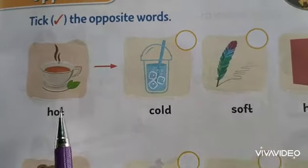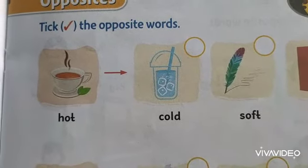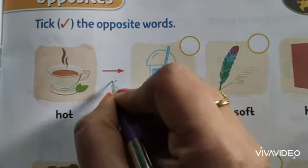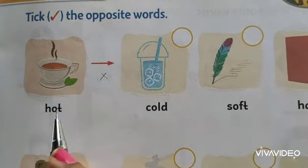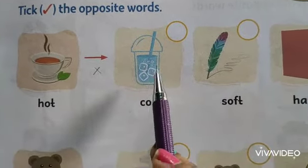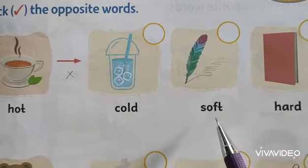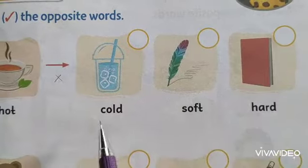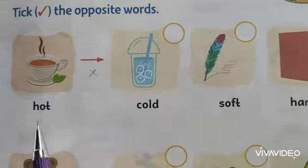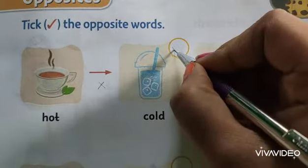First one, you see the picture is a cup of hot tea. So what is the opposite of hot? The opposite sign is like a cross mark. The options are: cold — C-O-L-D, soft — S-O-F-T, hard — H-A-R-D. So what is the opposite of hot? Cold. Yes, so put a tick mark.